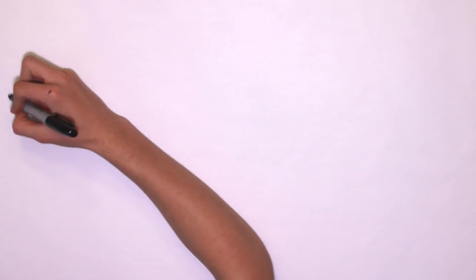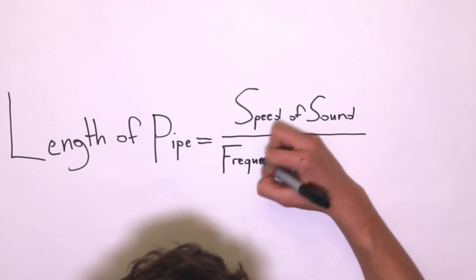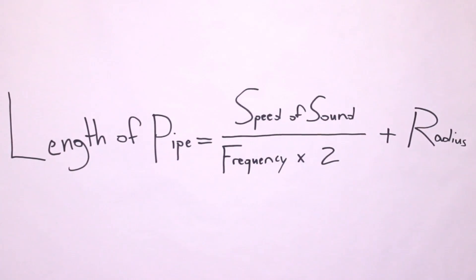The wavelength of the sound created will be approximately double the length of the pipe. Here's the equation we found: the length of the pipe equals speed of sound divided by the frequency you want times 2 plus the radius of the pipe.